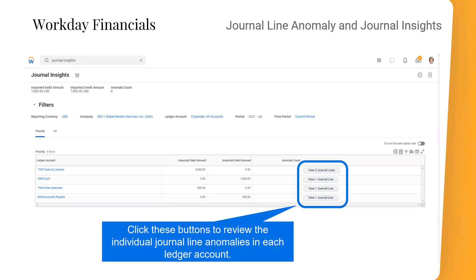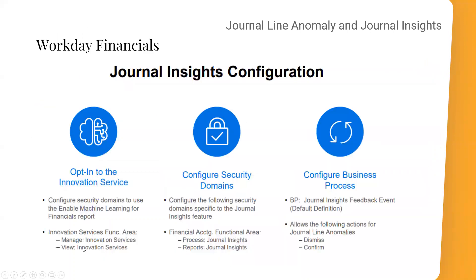Setup for Journal Insights is a bit different. You must opt into the innovation service through your customer success manager or account manager. Once enabled, there are a few basic steps to set up around what happens when Workday raises an anomaly, and what the scenarios are for dismissing, accepting, or reviewing anomalies.